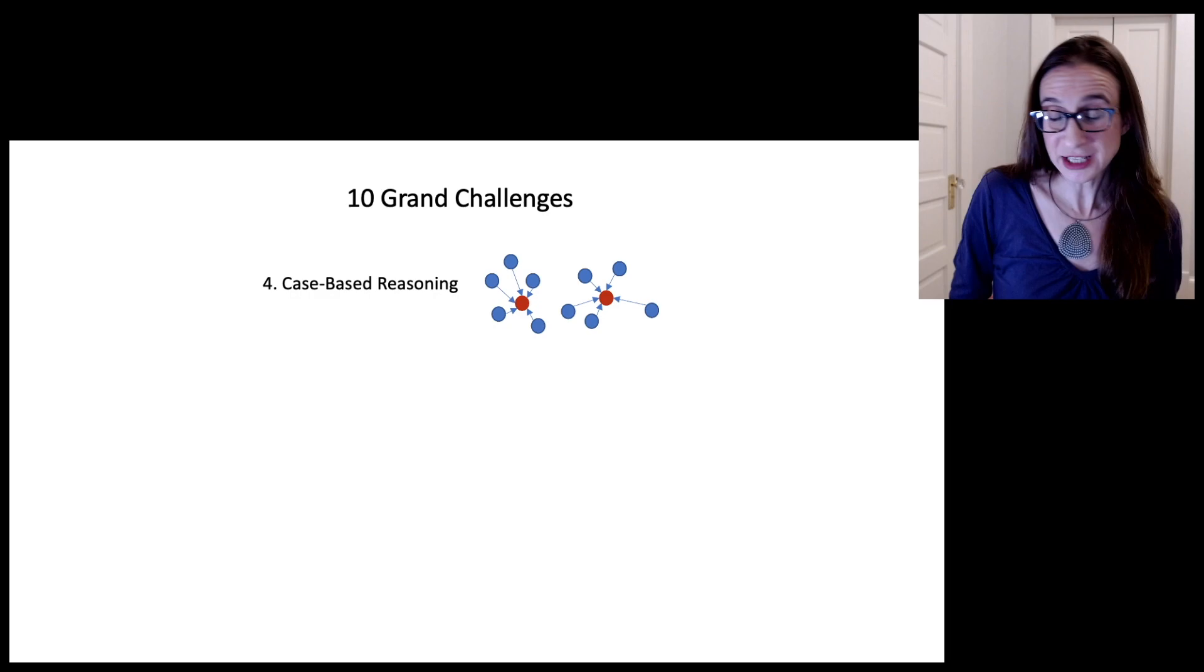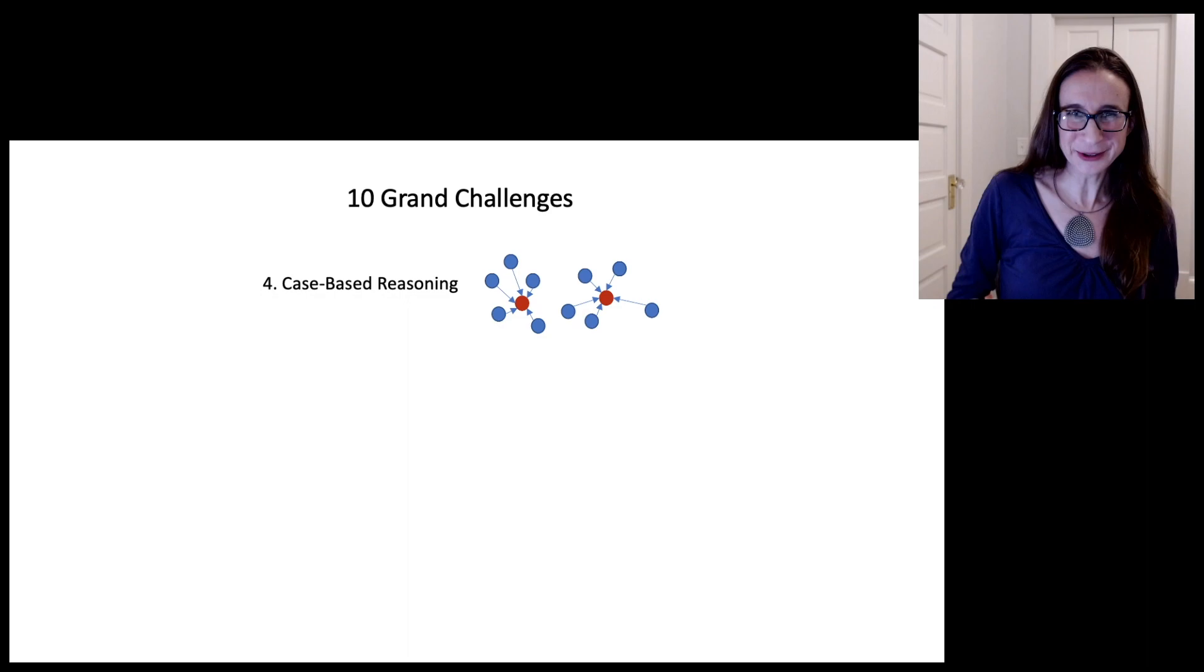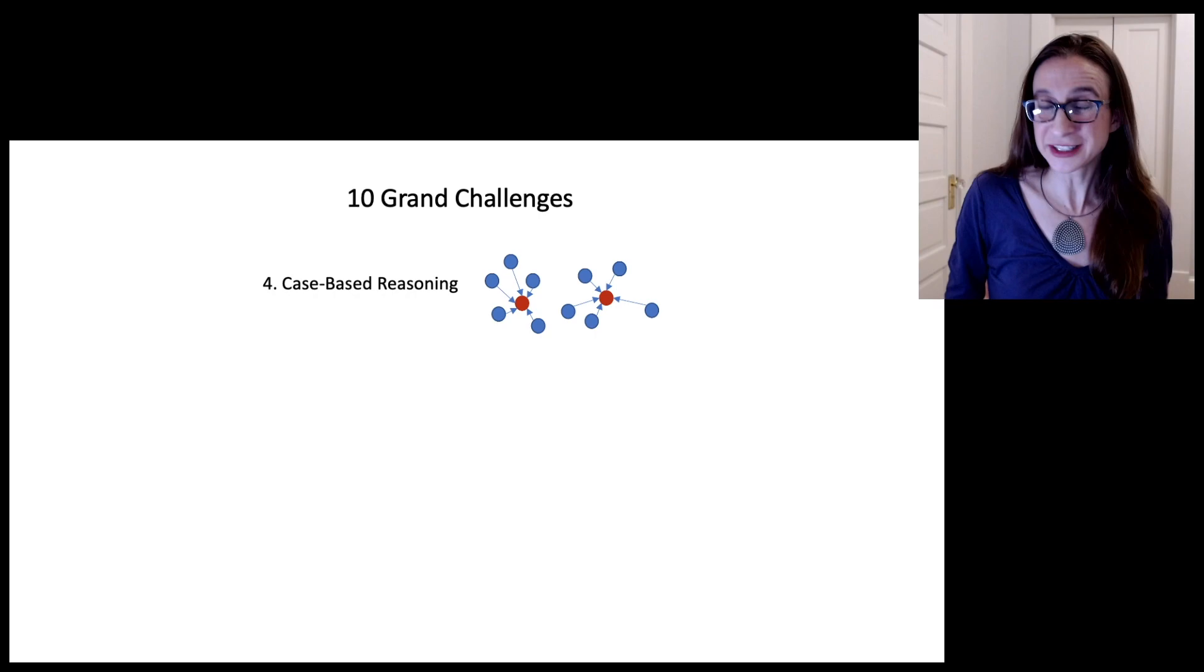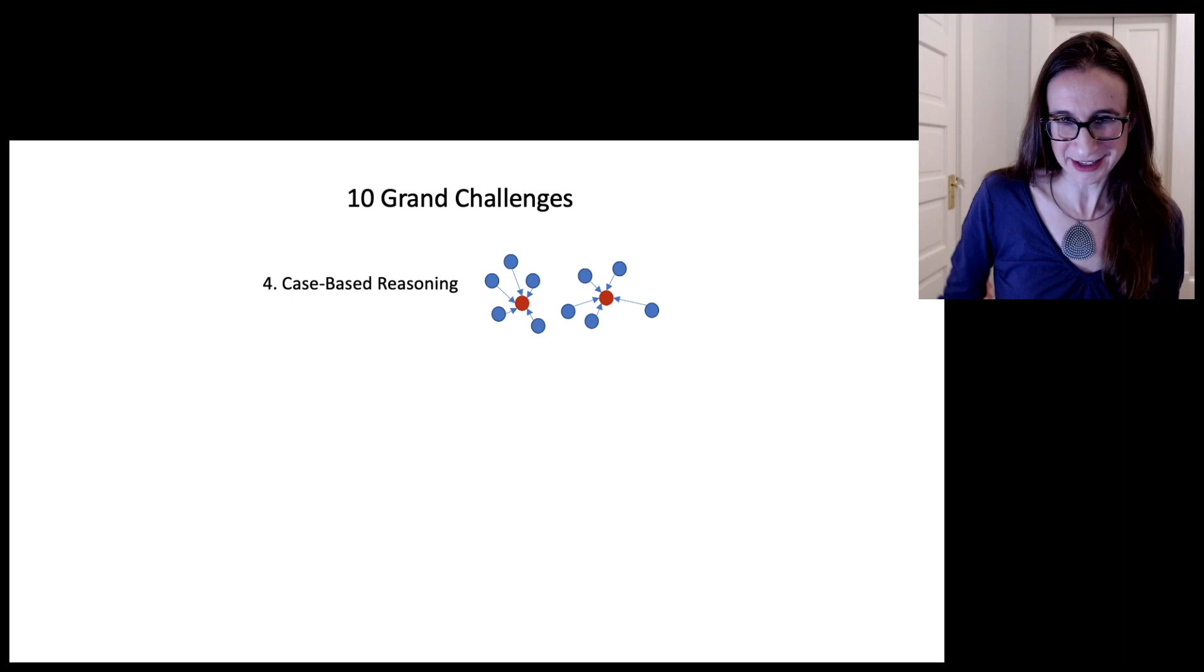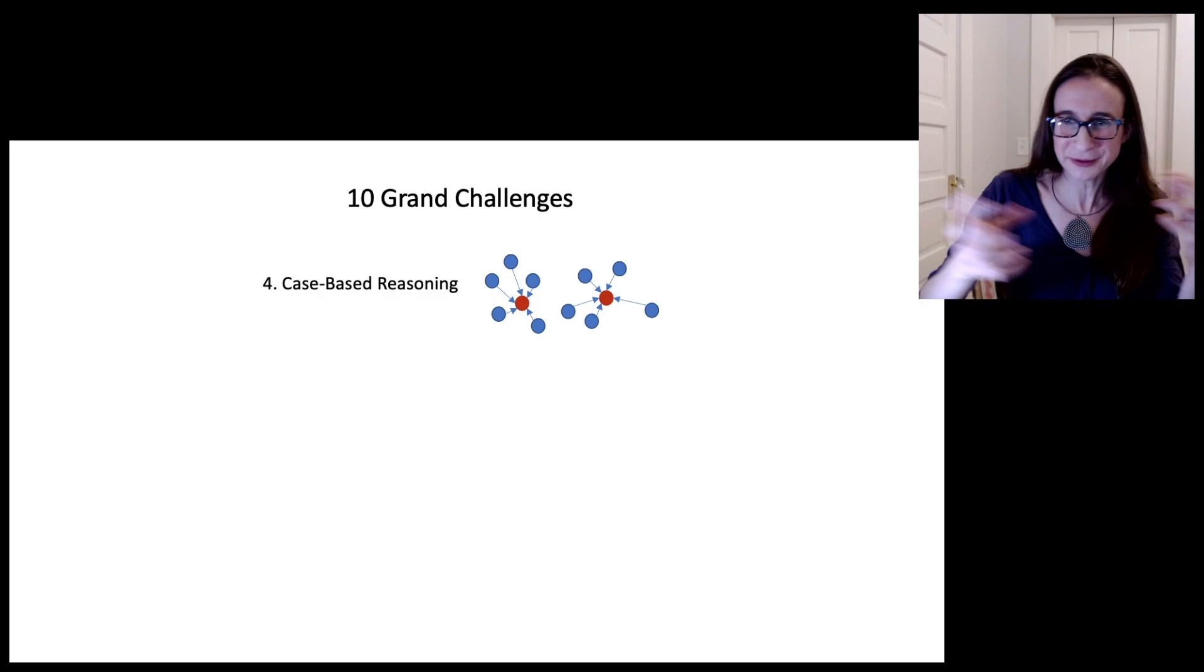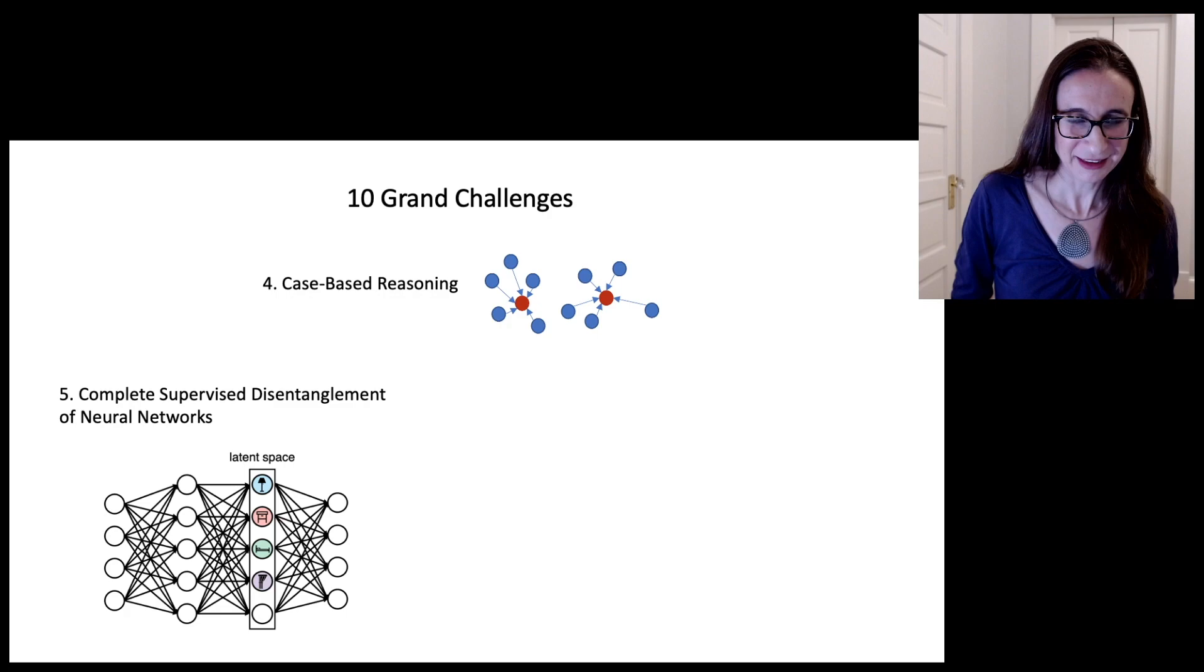The fourth one is case-based reasoning, which is kind of like k-nearest neighbors, but k-nearest neighbors is only the tip of the iceberg. Now case-based reasoning methods are used in deep learning, and so you can have interpretable deep learning methods that use case-based reasoning. And it's not just k-nearest neighbors, it's like k-nearest parts of prototypes, and so it can get very interesting and elaborate.